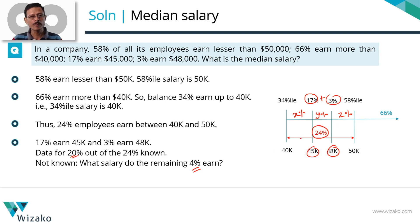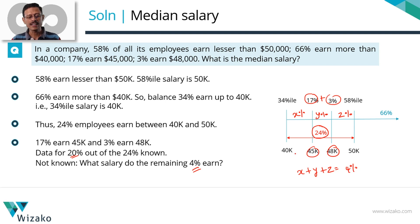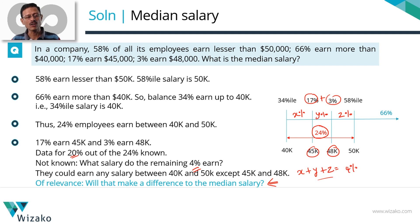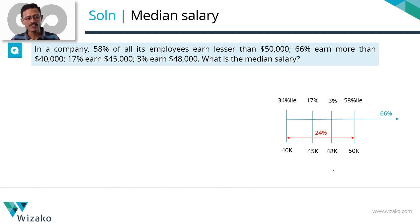X plus Y plus Z equals 4%. It could be 1 plus 1 plus 2, or 1.2 plus 1.2 plus 1.6. How low can any of these values be? They can be as low as 0. How high can any of these values be? As high as 4. The key question is: however X, Y, Z are distributed — whether it's 1, 1, 2 or 1.5, 1.5, 1 — is it going to make a difference to the median salary? Will the median salary be the same irrespective of what values we assign for X, Y, Z, as long as they add up to 4%? Let's find that out with a what-if scenario.